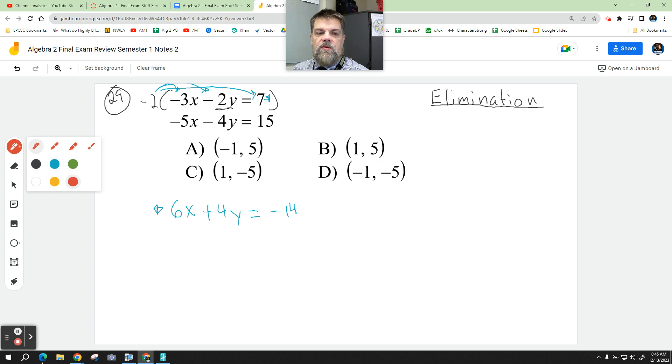Then I take my second equation, this one right here, and I just write it right underneath it. Negative 5x minus 4y is equal to 15.